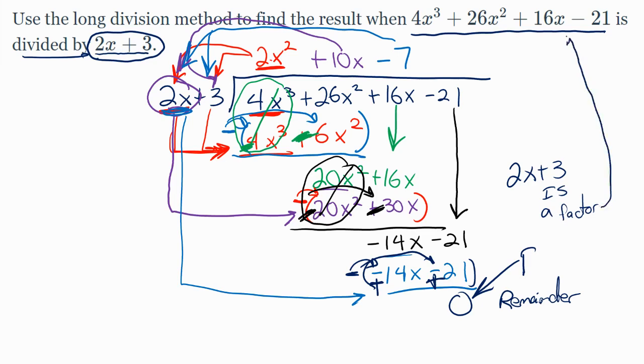Now what that means is my result of division could be written in factored form with 2x plus 3. And I could say that 4x³ plus 26x² plus 16x minus 21 can effectively be factored by 2x plus 3 times the result of my division, which is 2x² plus 10x minus 7.